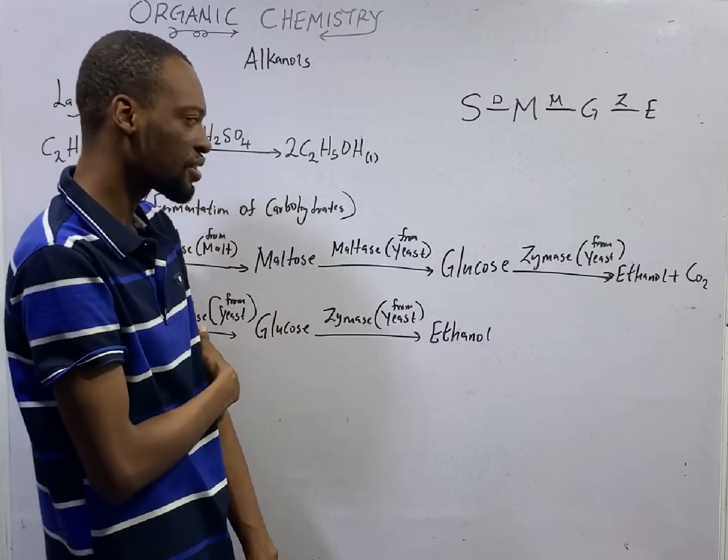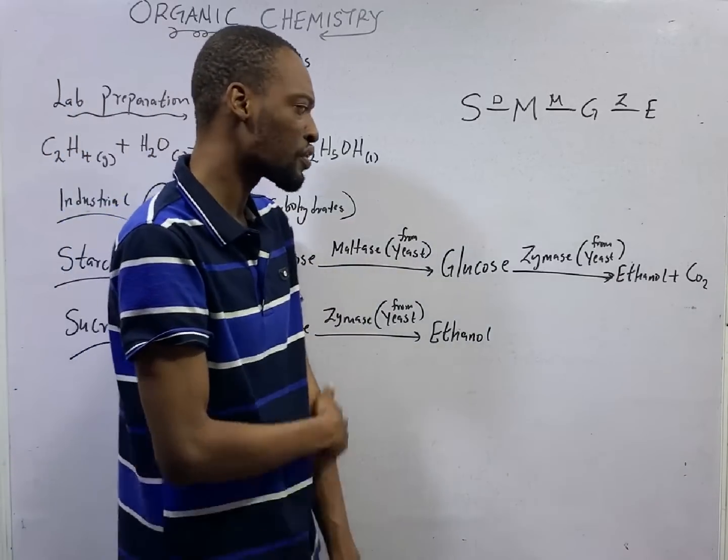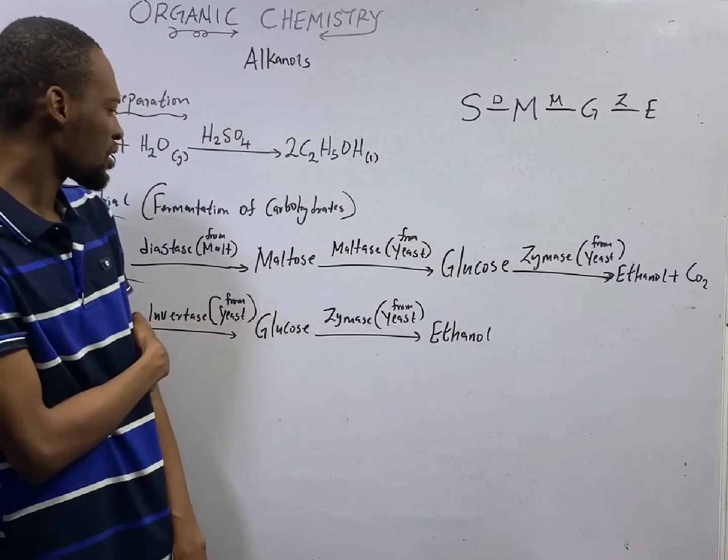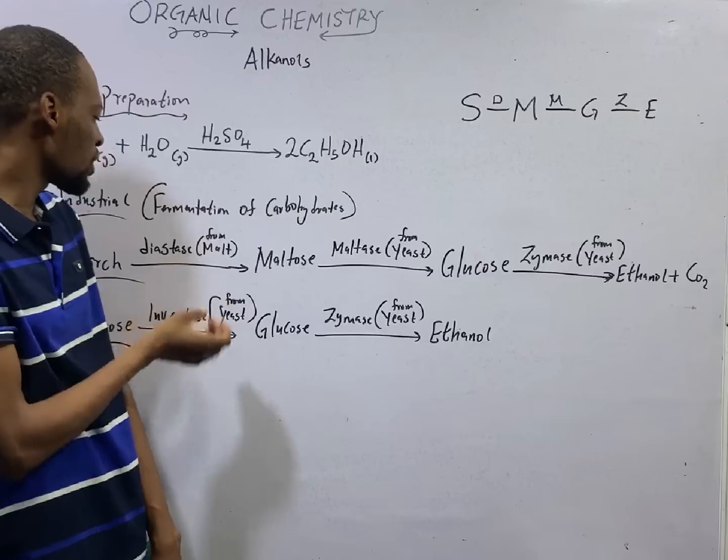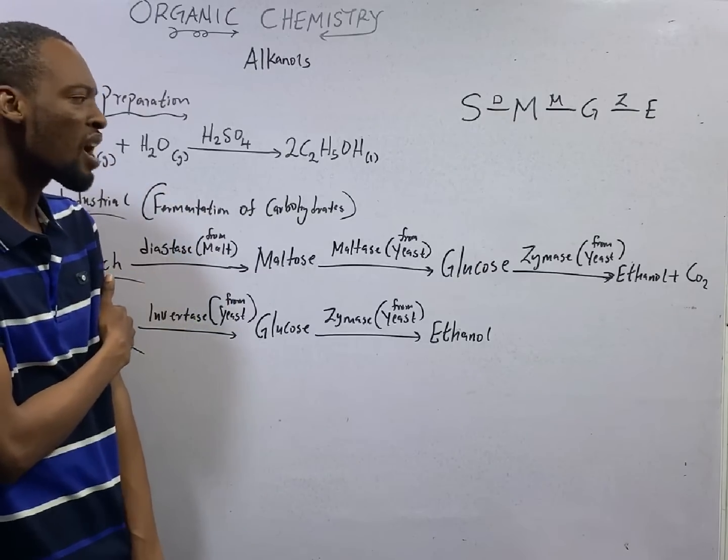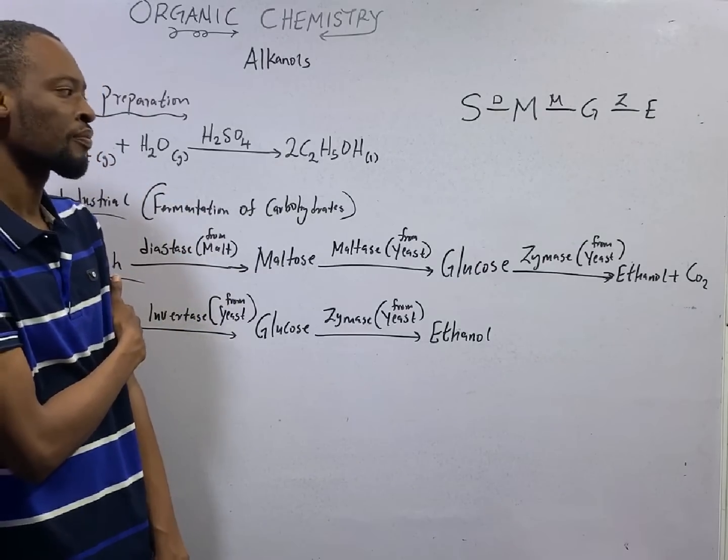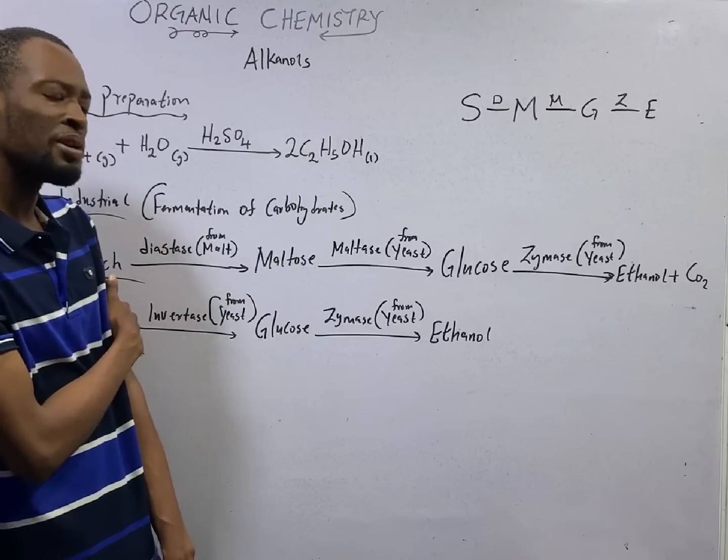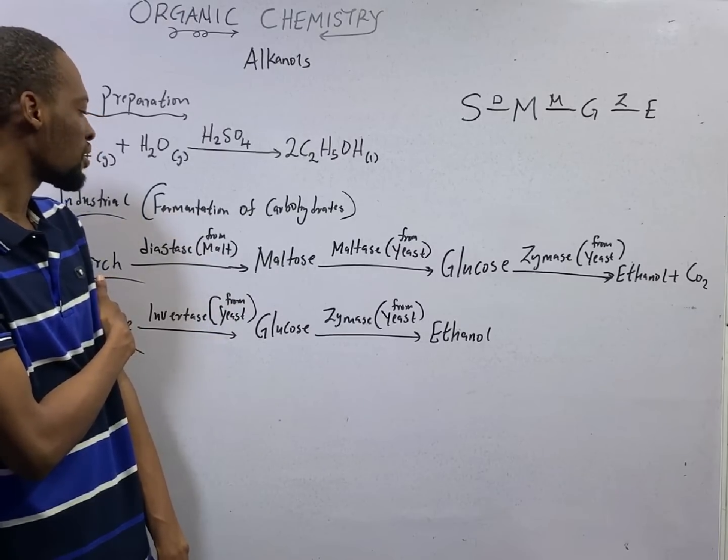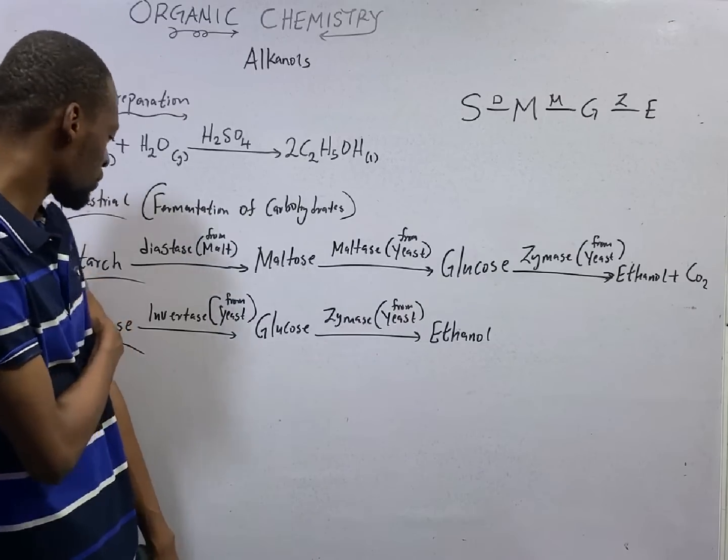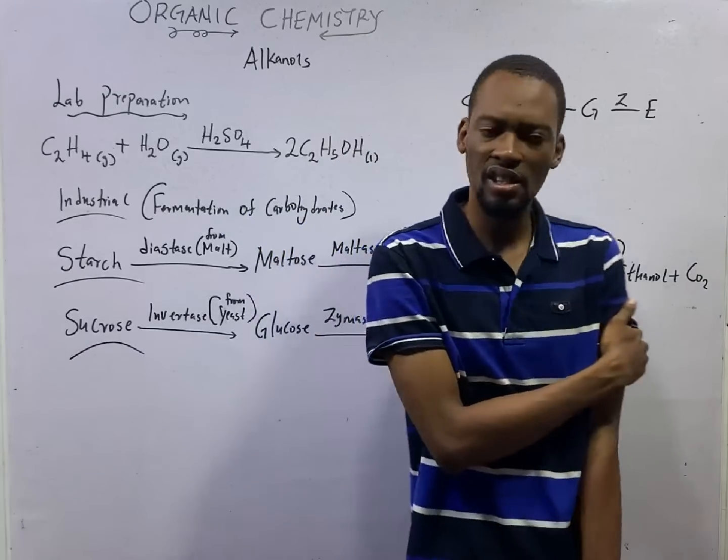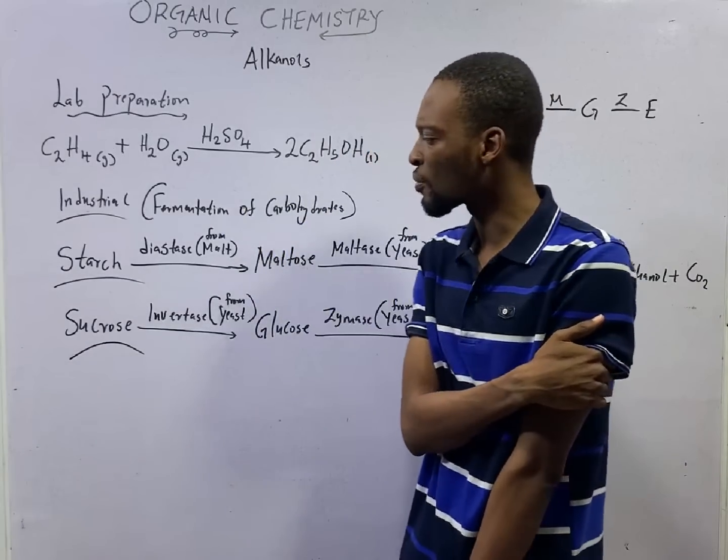Diastase is from malt. Maltase is from yeast. Zymase is from yeast. JAM may say, which of the following enzymes is not from yeast? They will give you diastase, maltase, and zymase. Maltase is from yeast. Zymase is from yeast. But diastase is not from yeast. It is from malt. Apart from diastase, other enzymes involved in fermentation are from yeast.